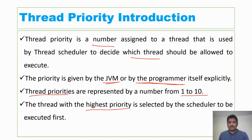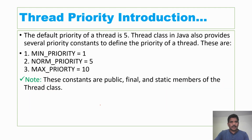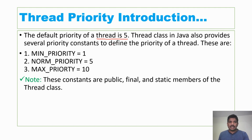That is the importance of thread priority in Java programming. The default priority of a thread is 5, which means once a thread has been created without any assigned number, the default priority of 5 is assigned by the JVM. Or, if you want to assign a priority explicitly, that is also possible.